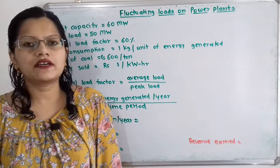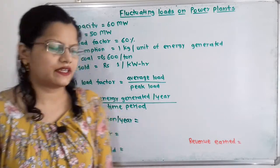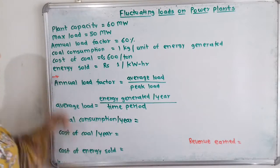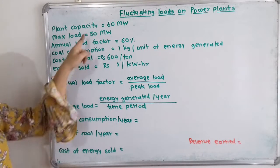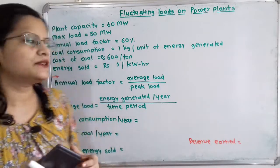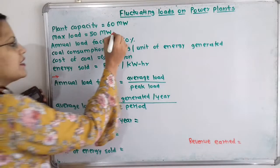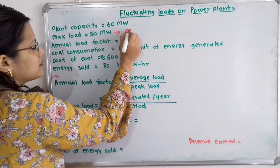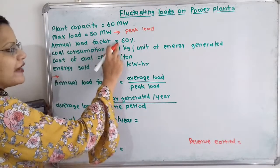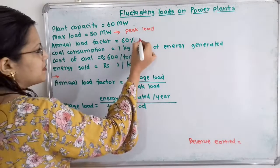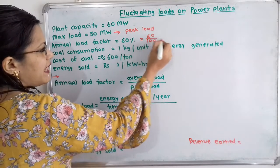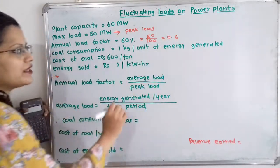Let us first understand what is the given data. Plant capacity is 60 megawatt. Then maximum load, that is 50 megawatt — this maximum load is also known as peak load. Then annual load factor is 60%, which we write as 60 divided by 100, equal to 0.6.